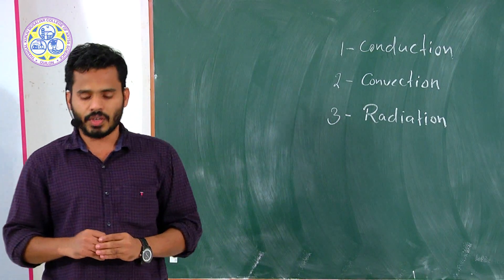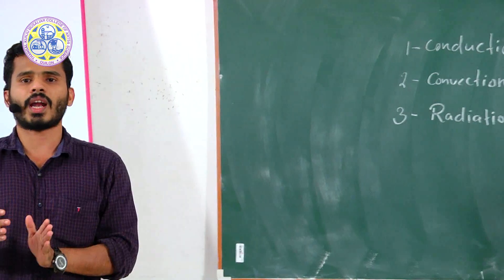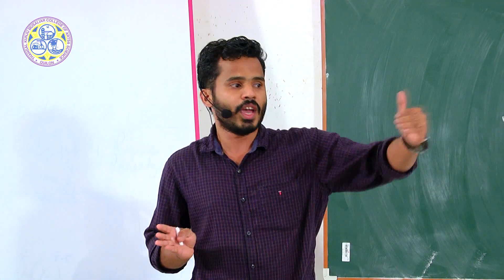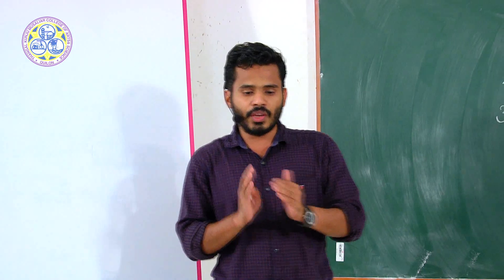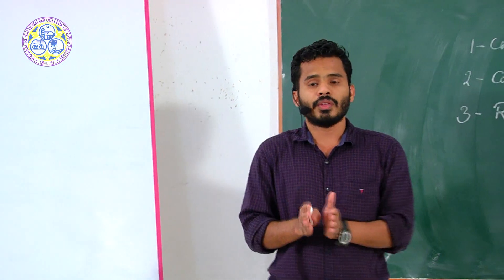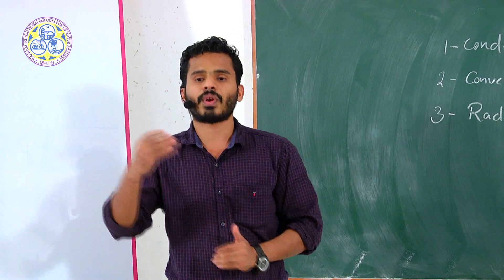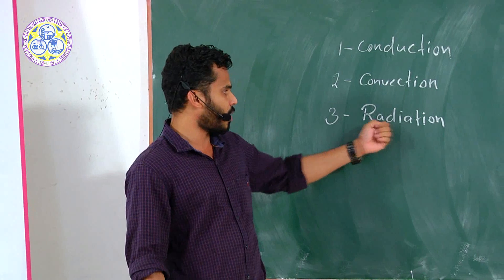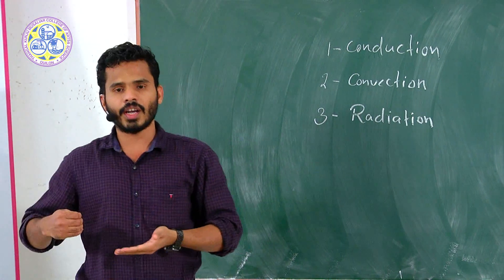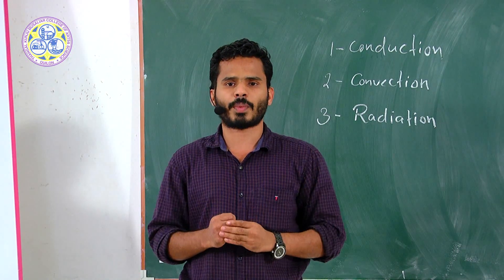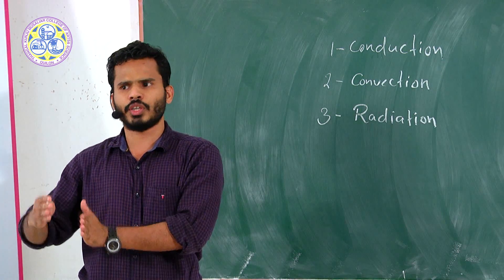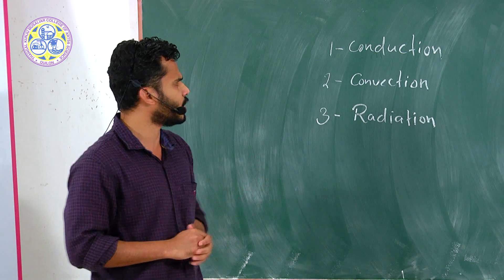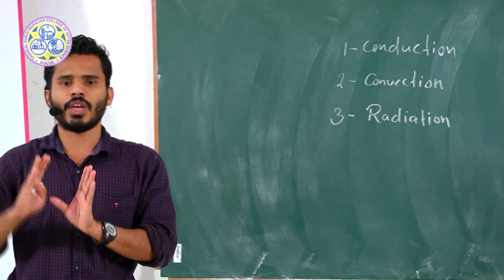The third one is radiation. In the radiation process, heat transfers from one point to another but there is no need of an intervening medium. Even though there is no medium, heat transfers from one place to another. The heat energy we get from the sun is the best example of radiation. In radiation, the heat is in the range of the electromagnetic spectrum, especially in the infrared region.